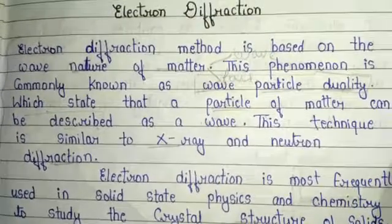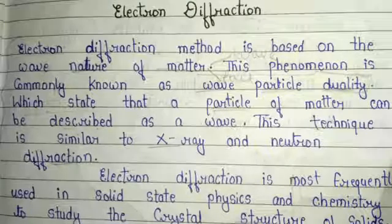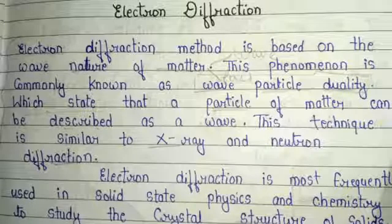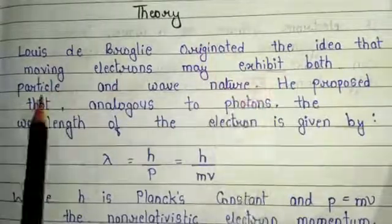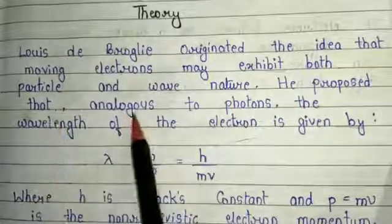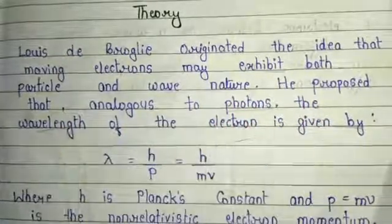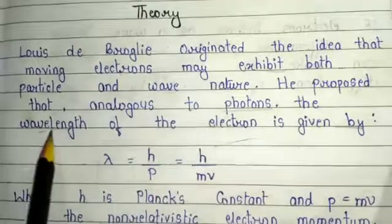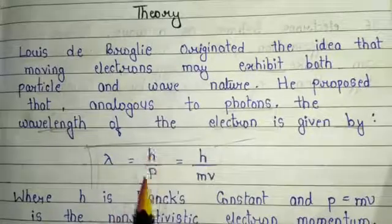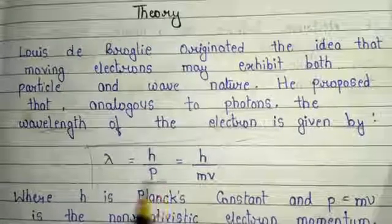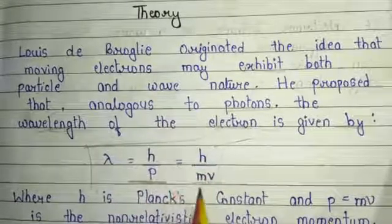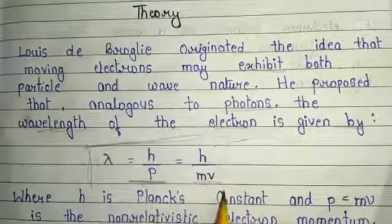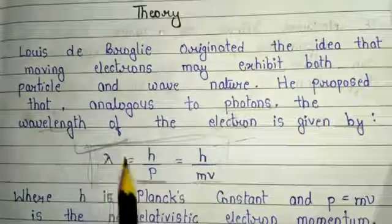I provide a handmade note which I hope will be helpful for your semester exam as well as any competition exam preparations. Now the theory portion of electron diffraction: Louis de Broglie originated the idea that a moving electron may exhibit both particle and wave nature. He proposed that analogous to a photon, the wavelength of the electron is given by the formula lambda = h/p, where p is the momentum of the electron, also denoted by mv. So basically lambda = h/mv.